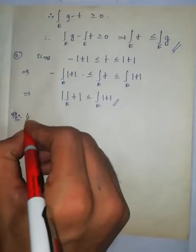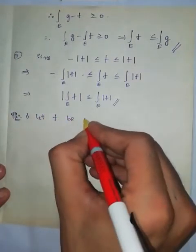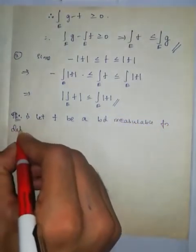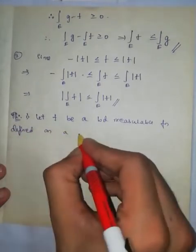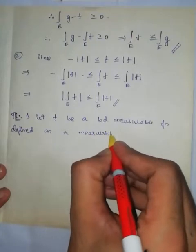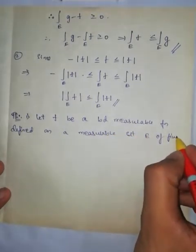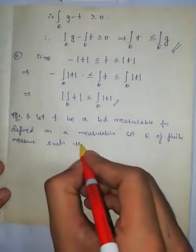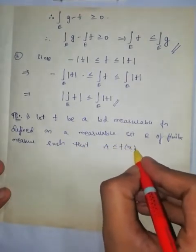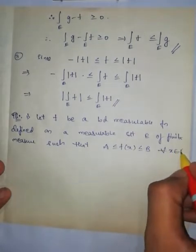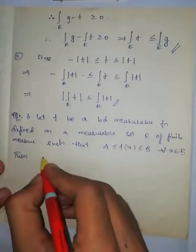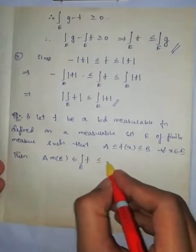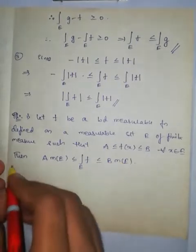Theorem one: Let f be a bounded measurable function defined on a measurable set E of finite measure. If a ≤ f(x) ≤ b for all x in E, then a times the measure of E is less than or equal to the Lebesgue integral over E of f, which is less than or equal to b times the measure of E.